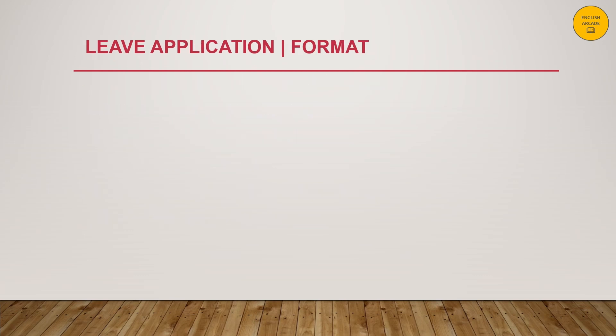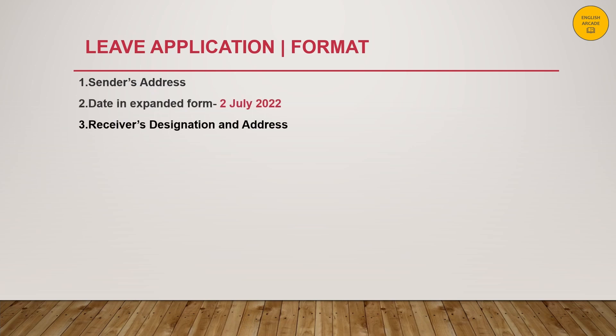Let us now look at the format of a leave application. We first write the sender's address, followed by the date. Next comes the receiver's designation and address, after which we write the salutation. Next comes the subject — in this case, the subject would be 'Application for Leave' or 'Leave Application.'